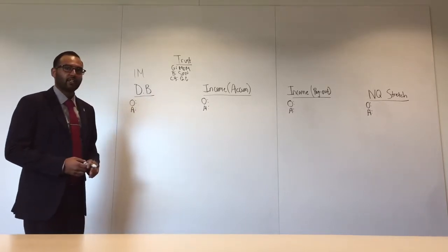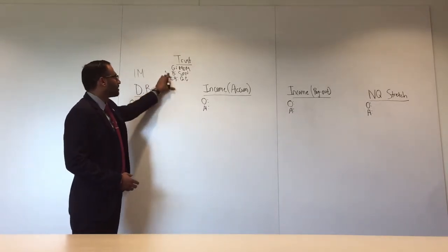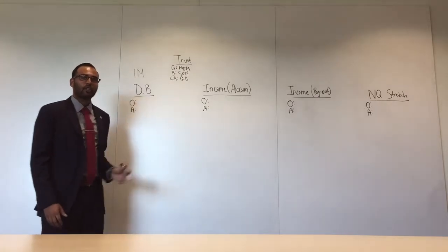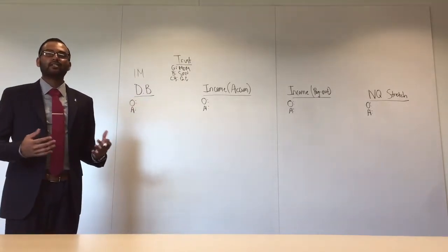So let's just take a look at a specific case. Let's assume we have a trust where the mom is the grantor, the son is the beneficiary, and the contingent beneficiary are the grandchildren. When you're talking to the trustee, ask them: what are these assets intended for?